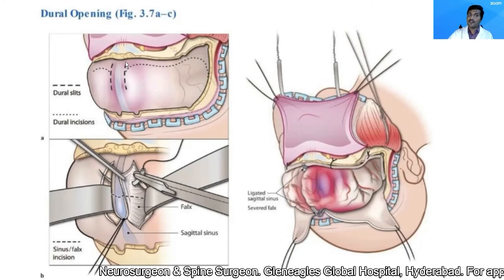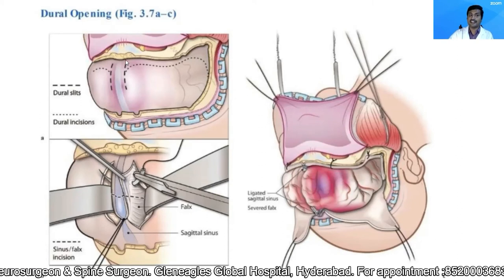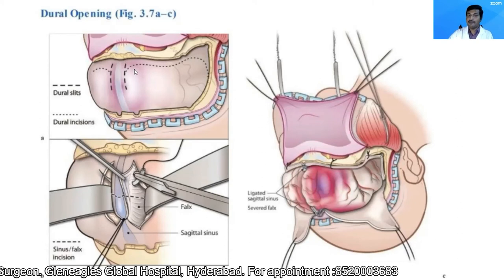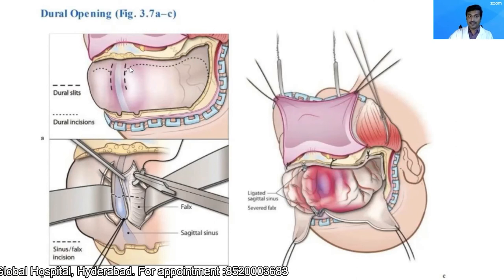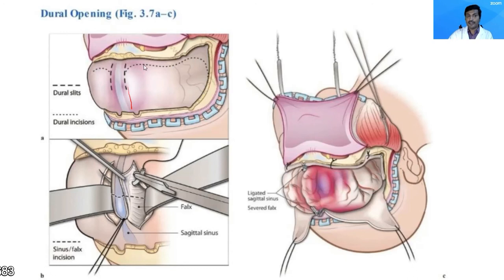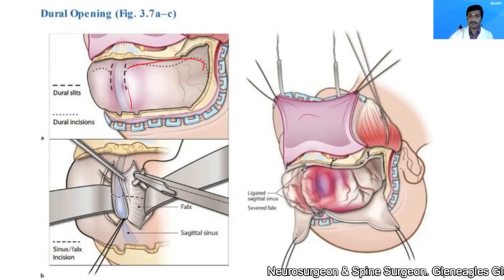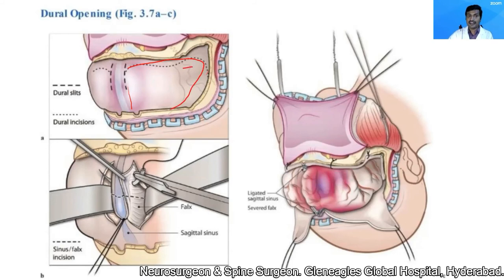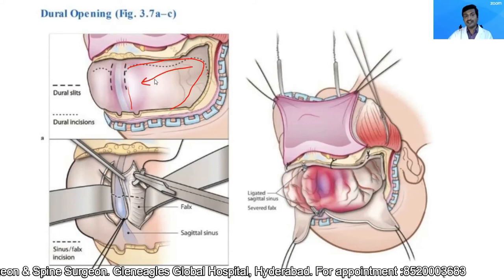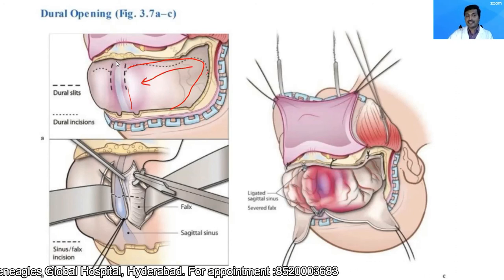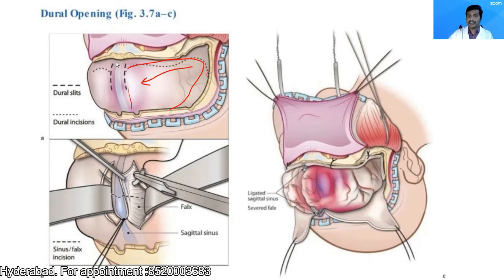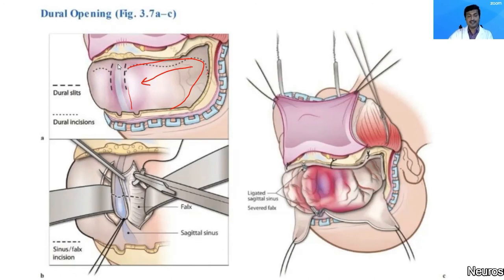If you have no intention of cutting the superior sagittal sinus, you can open the dura on either side with the flap based on the midline, reflecting it medially. However, cutting the superior sagittal sinus and releasing it anteriorly will release pressure on the frontal lobe. This technique is more demanding.